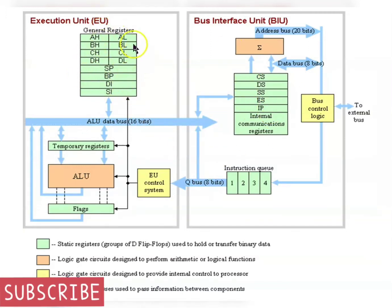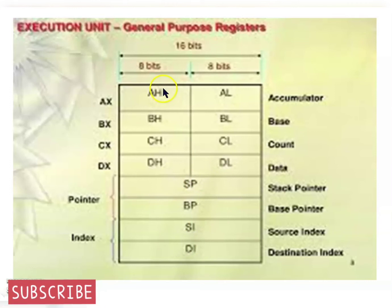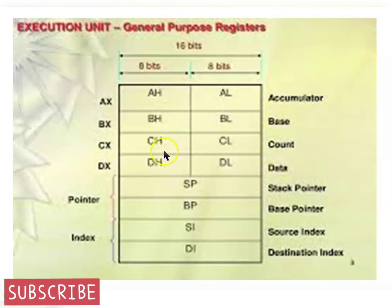We will discuss the general registers in the execution unit. The general registers are divided into two sets: data registers and address registers. Data registers are for calculation. There are four pairs of registers: AH-AL, BH-BL, CH-CL, and DH-DL. Each of these registers is 8 bits wide.